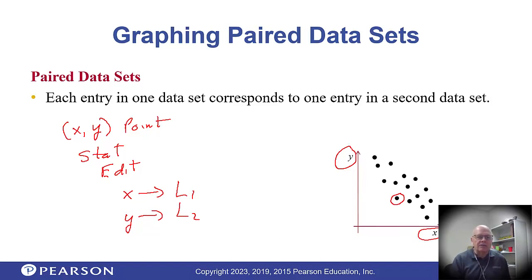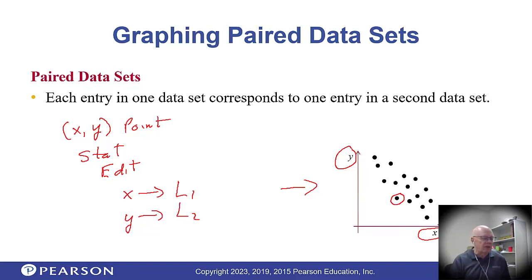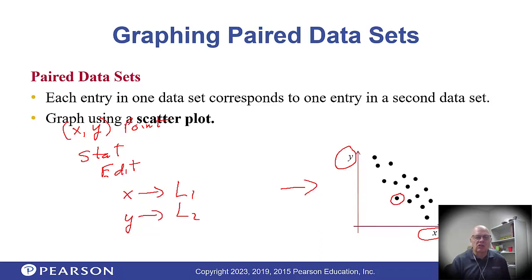You can also do scatter plots on your calculator. Go to Stat, Edit, put the x values in list one and the y values in list two, then tell the calculator you want to plot a scatter plot and where to find the numbers. You get a picture that gives you an idea of how the x's and y's are related to each other. The scatter plot will be the first option on the list when you set up your plot.